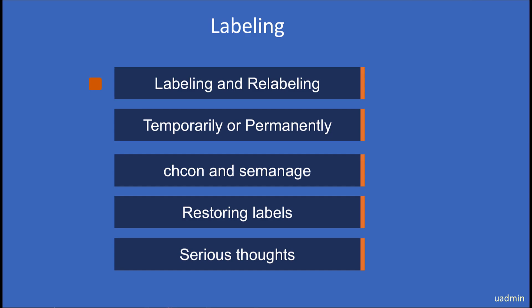Now let's have a look at labeling. In this module we'll discuss labeling and relabeling of objects. Labeling can be temporary or permanent, and we can use commands like chcon and semanage to do that. We will also restore labels and generate a system-wide relabel on boot. We will end with a serious warning, so please stay tuned.